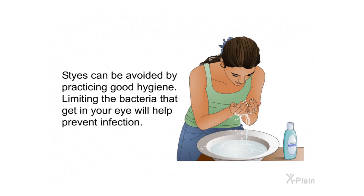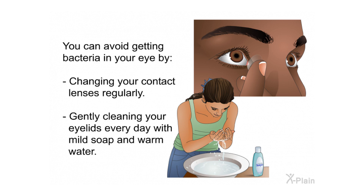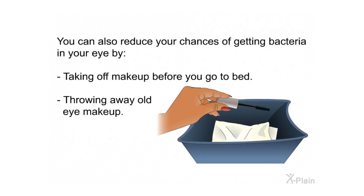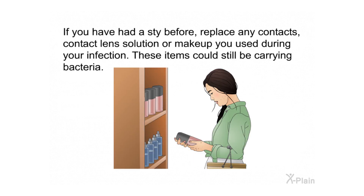Styes can be avoided by practicing good hygiene — limiting the bacteria that get in your eye will help prevent infection. You can avoid getting bacteria in your eye by changing your contact lenses regularly and gently cleaning your eyelids every day with mild soap and warm water. You can also reduce your chances by taking off makeup before you go to bed and throwing away old eye makeup. If you have had a stye before, replace any contacts, contact lens solution, or makeup used during your infection, as these items could still be carrying bacteria.